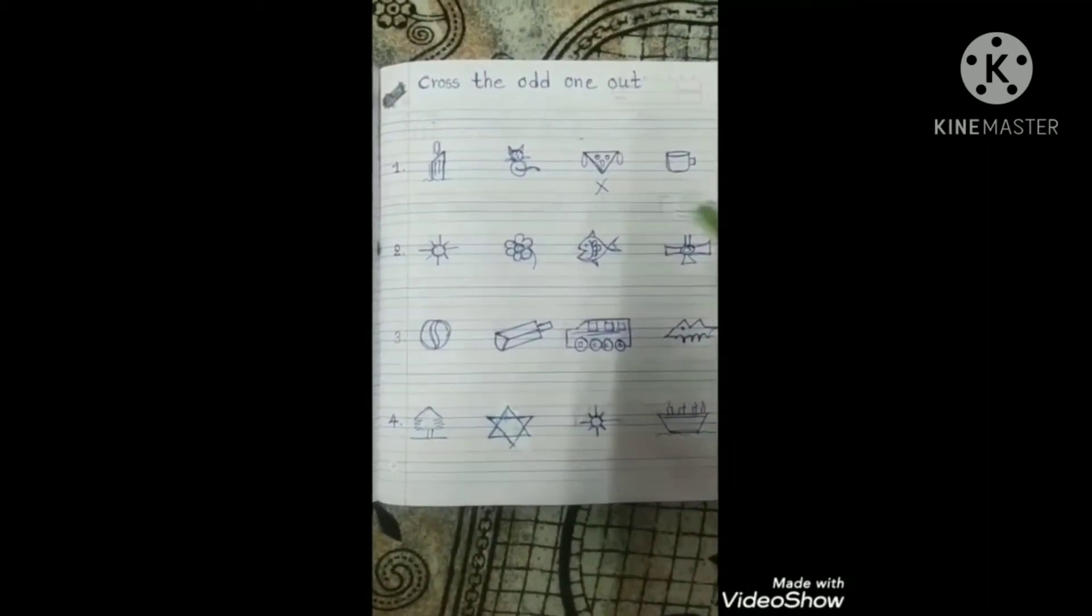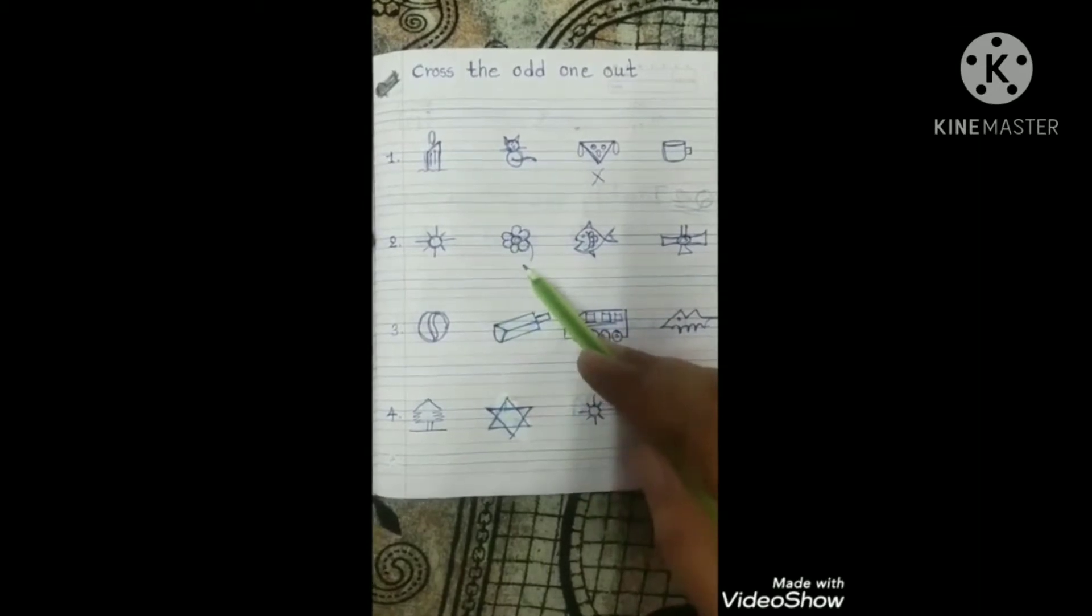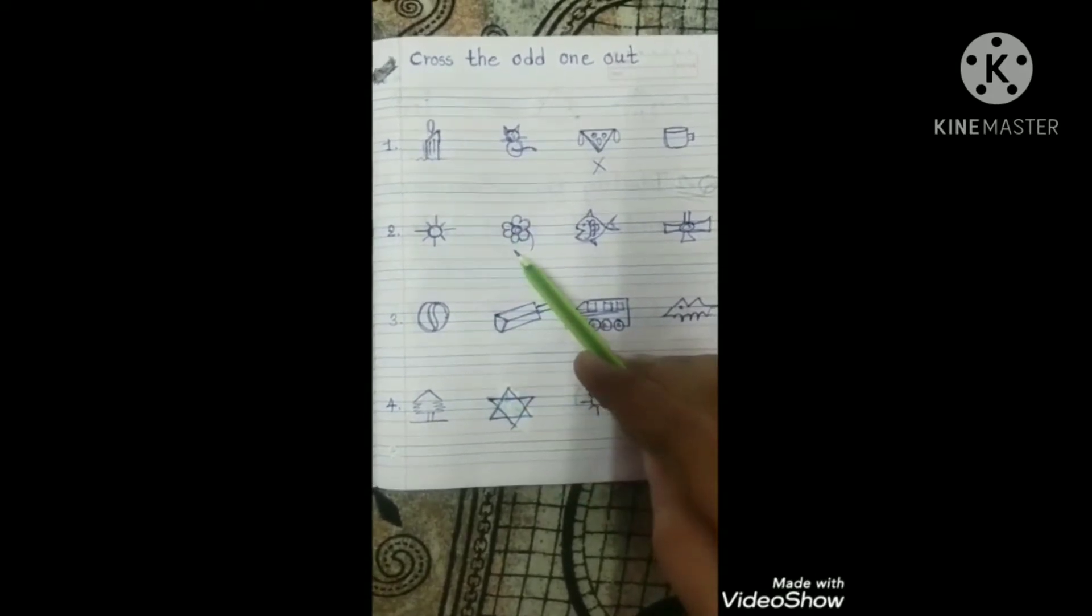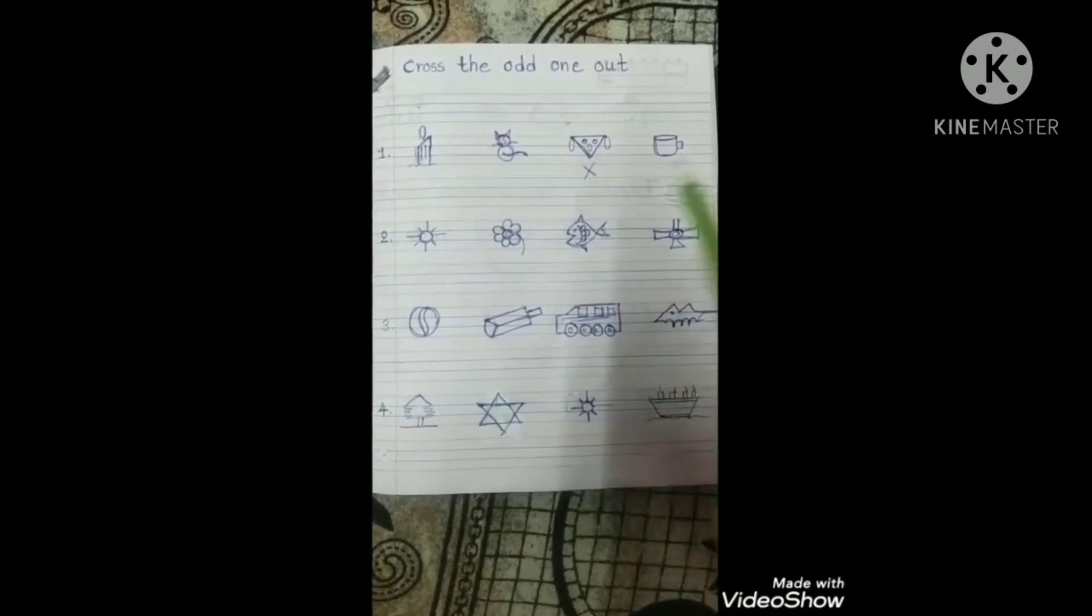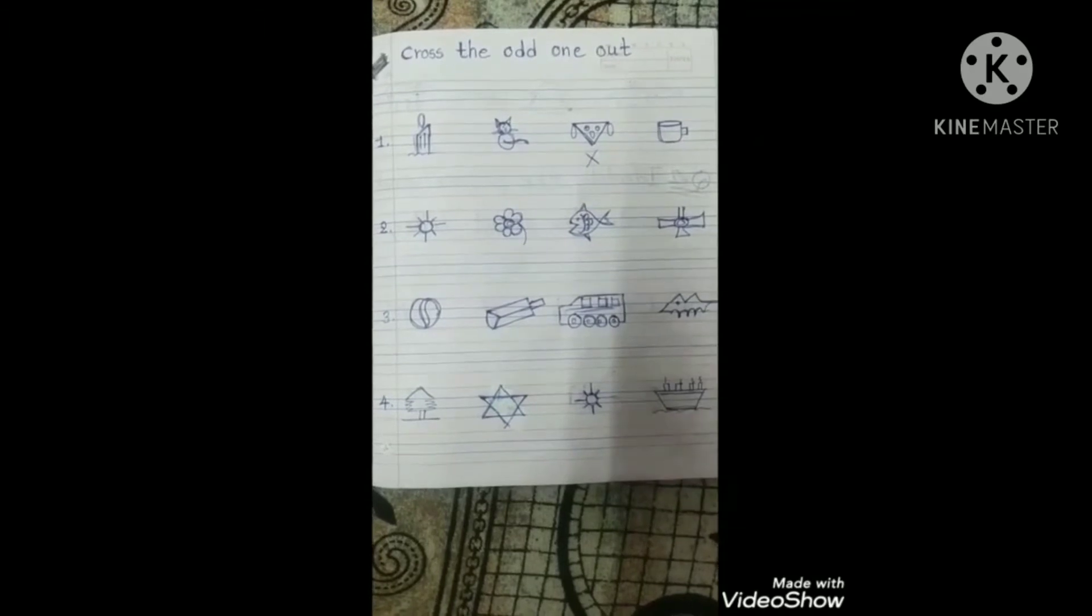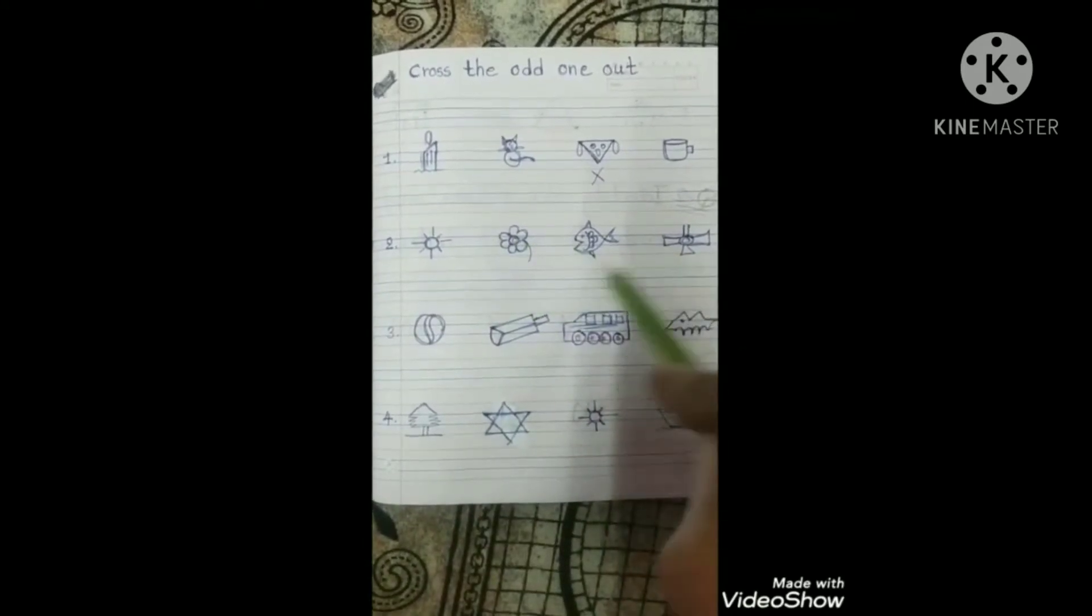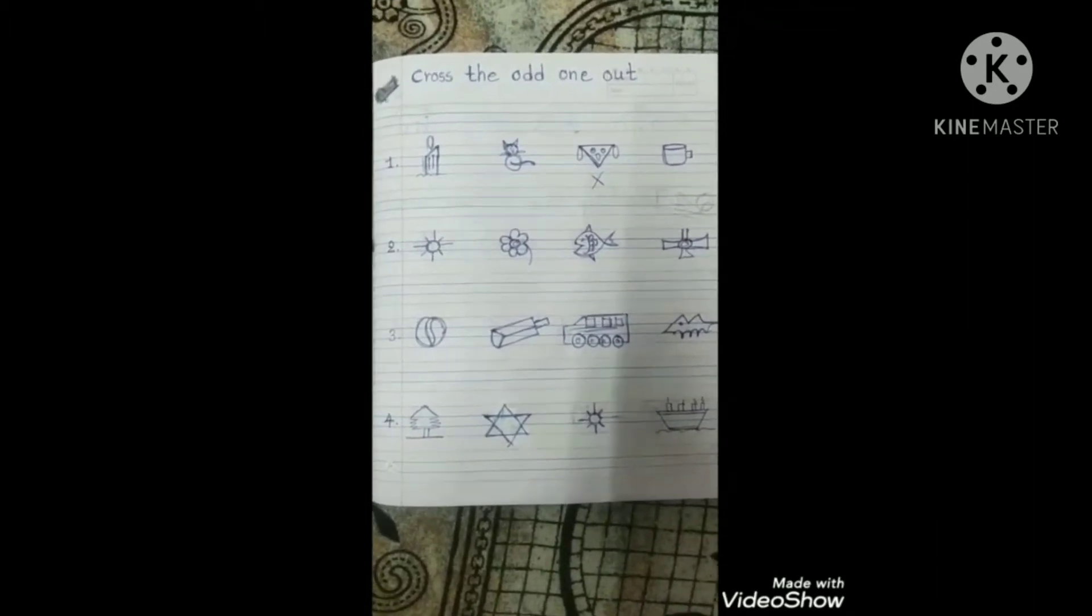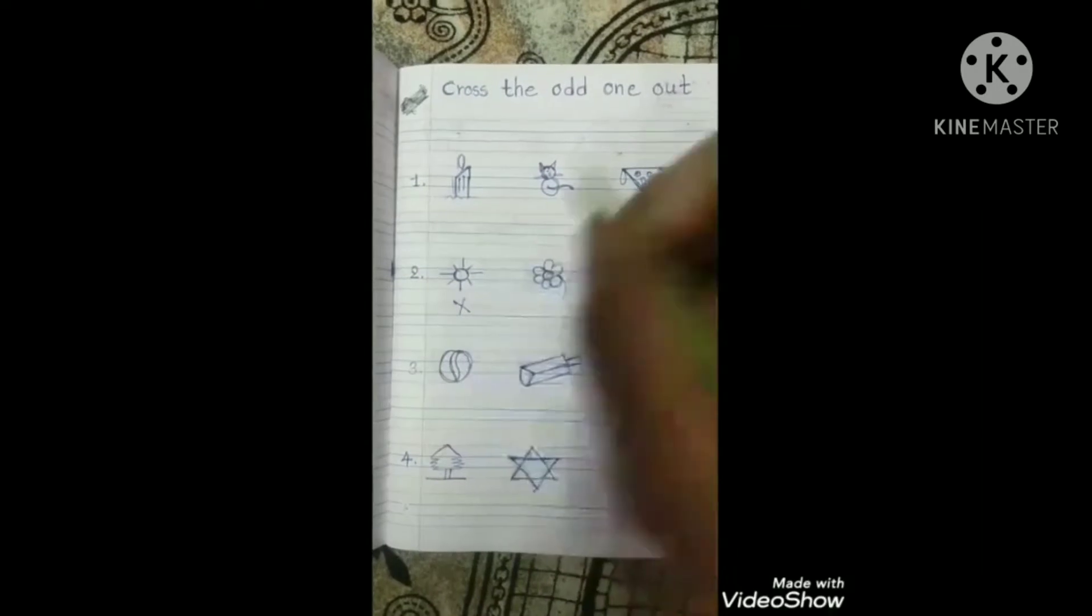Very good. Now next one, see these pictures. Sun, flower, fish, and fan kids. In this line, S for sun, S for flower, F for fish, and F for fan. So now in this line, these three pictures start from F. And this one is S for sun. So sun is odd. So kids, you have to cross out sun because sun is odd, S for sun. Right?